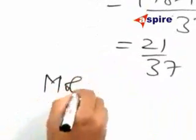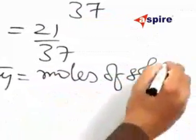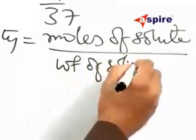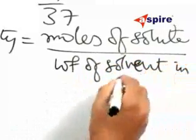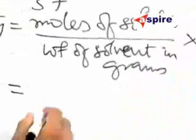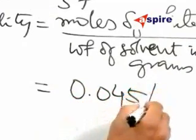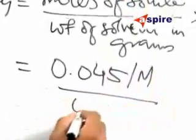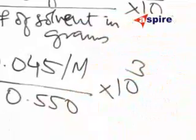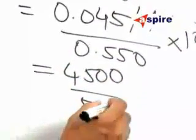Now, molality is also equal to moles of solute, the whole divided by weight of solvent in grams, multiplied by 1000. That is in turn equal to 0.045 divided by m, the whole divided by 0.550 multiplied by 1000. Simplifying this, we will get 4500 divided by 55 into m.